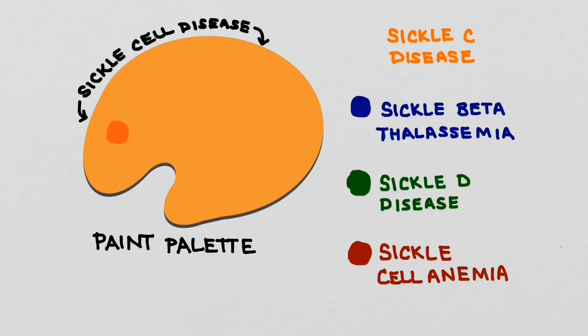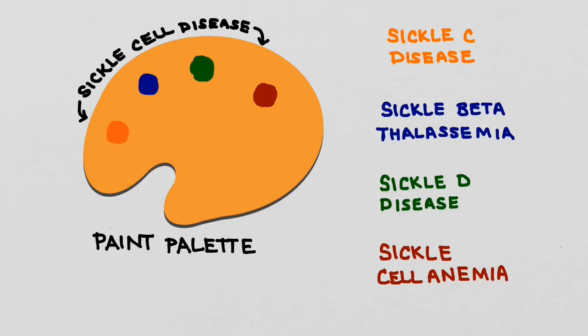So as you can see here, we have orange for sickle C disease, blue represents sickle beta thalassemia, green for sickle D disease, and red is sickle cell anemia. As you can see, sickle cell anemia is just one of many colors, and of course there are other types of sickle cell diseases.